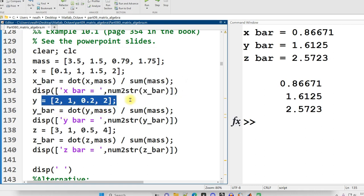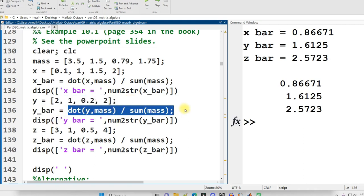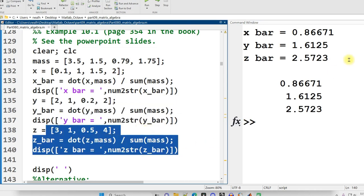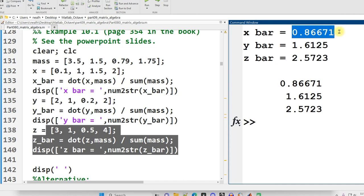Display that out, and then I have a vector of the y values. And I dot product the y values with the masses, and divide by the sum of the masses. And display that out. And then I do the same thing with z. Alright, and there's my solutions right there. You can see the x coordinate is in fact the same as what the PowerPoint slides said.